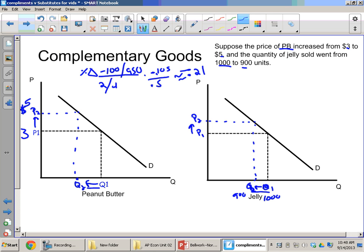So what does that point two one mean? Well, the first thing is that whenever this number comes up negative, if it's a negative number, then that means the two goods are complementary. Why?